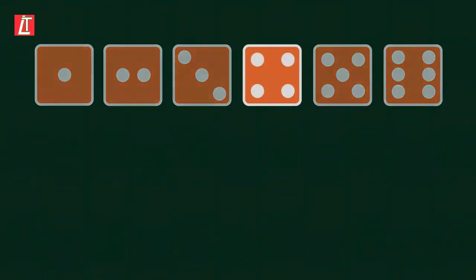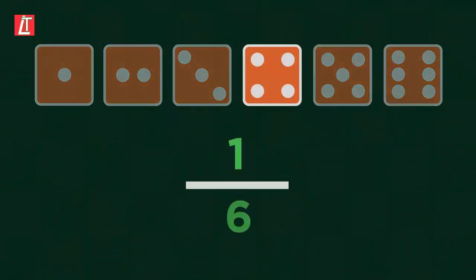If you roll a dice, there are six possible outcomes, and the chance of getting four is one out of six.